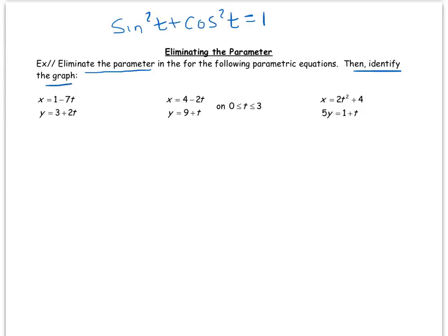In other words, is it a line, a circle, a parabola? So let's look at this first example here. Here are my parametric equations, and in order to eliminate the parameter it's not so bad. I can simply solve for t.